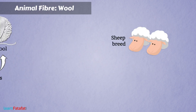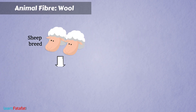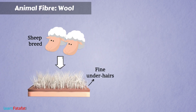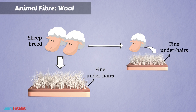There are some breeds of sheep which have only fine under hair. If we select parents which produce only soft under hairs, then they give birth to sheep which will have only soft under hairs. It is possible to produce organisms with desired characters by selecting parents of similar characters, such as soft under hair. This process is called selective breeding.